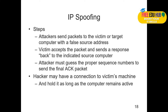In IP spoofing, an attacker sends packets to the victim or target computer with a false source address — claiming to be a different computer. The attacker uses another computer's IP details to send packets, fooling the destination into thinking the traffic is coming from a trusted computer. The victim accepts the packets and sends a response back to the indicated source. The attacker must then guess the proper sequence number to send the final ACK acknowledgement packet.